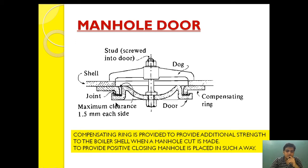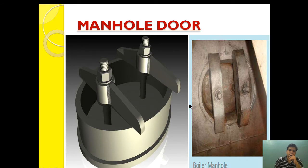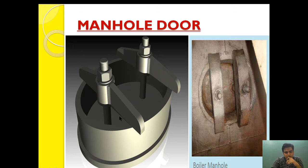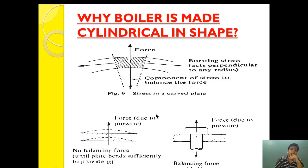The compensating ring provides additional strength to the boiler shell when a manhole door is cut. To provide positive closing, the manhole is placed in such a way — this is the top view — showing the manhole dog nut, the long studs, and the manhole arrangement closing from inside.